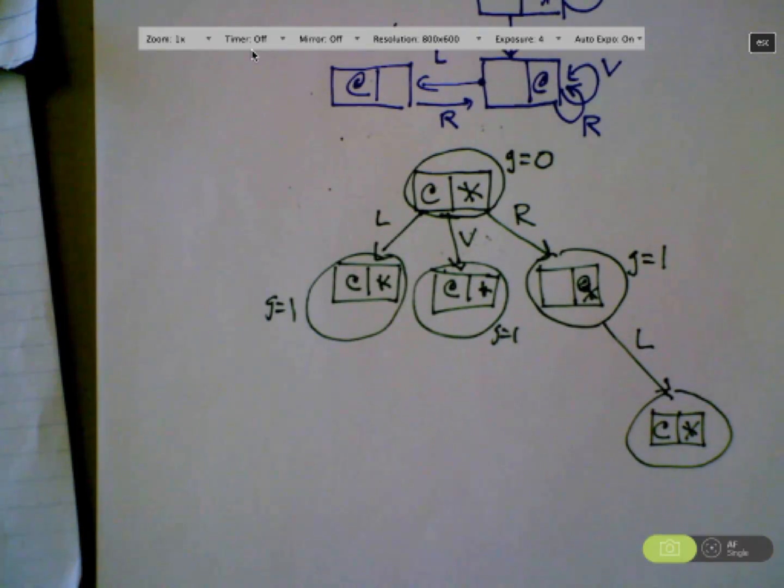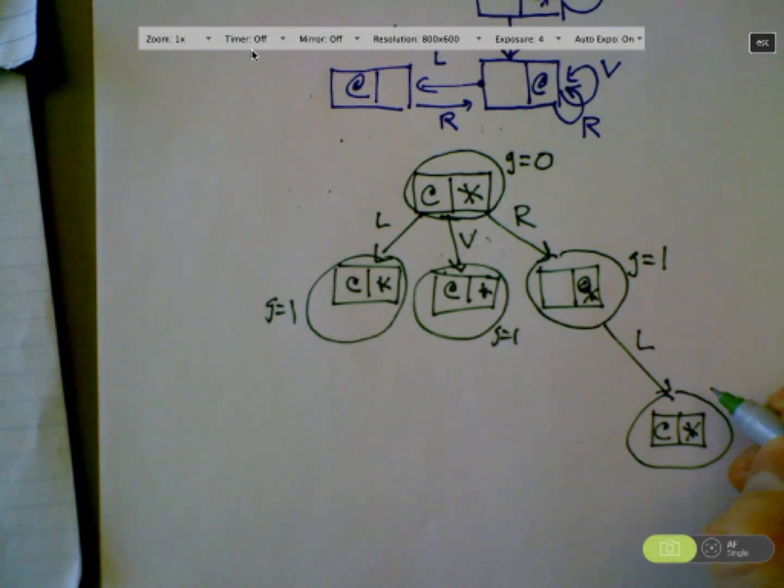Now, this little boxy thing is supposed to represent the state of the world. That's the state. And this circle thing, that's the node. What's the g value of this node? So, of course, this is the same as the root state. So there's an entire copy of this tree underneath this node. And I really don't want to waste my time looking at that.